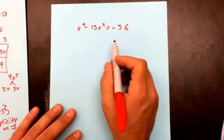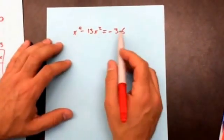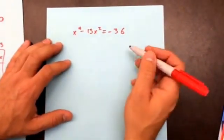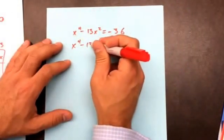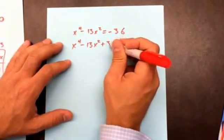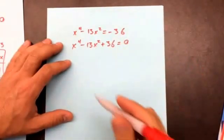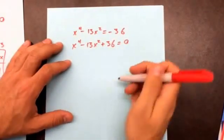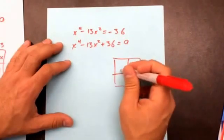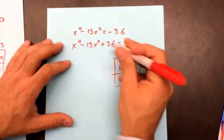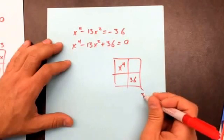For the next example, it's really important to get the equation equal to zero first, so I'm going to add 36 to both sides. Then I'm going to factor using the box method: my first term goes here, my last term goes here, and I multiply them together.